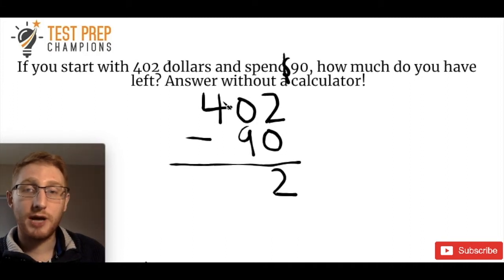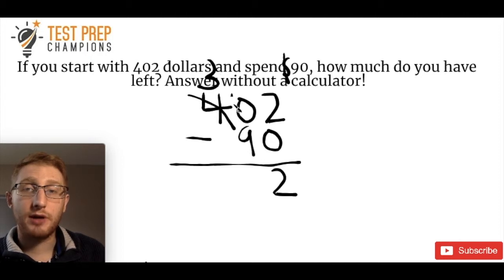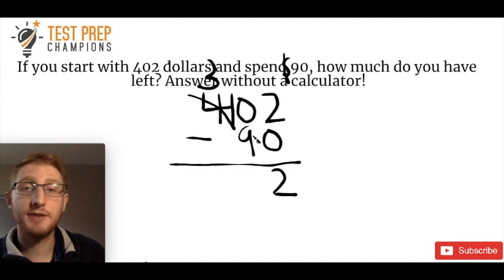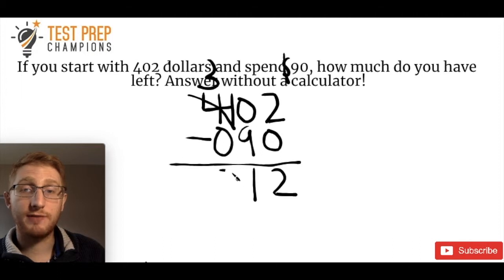So what we do is look at the number next door — we've got a perfectly good 4 right here. We can borrow. We cross the 4 out and replace it with a 3, taking one away — four minus one is three. Then we put a one right here and make this a 10. Now we can do 10 minus 9, which gives us 1. And then, imagining there's a zero in the hundreds place of the bottom number, 3 minus 0 gives us 3, so we get 312.